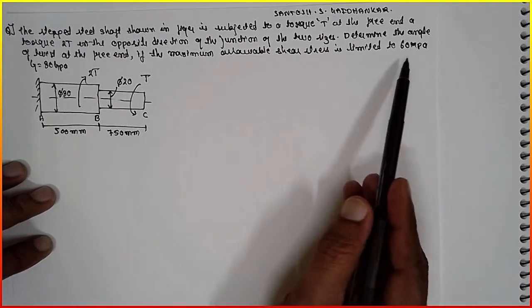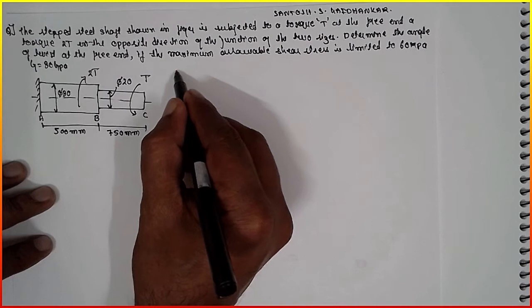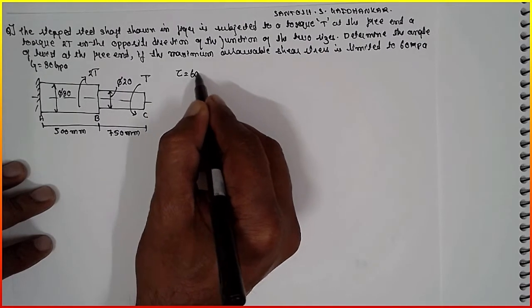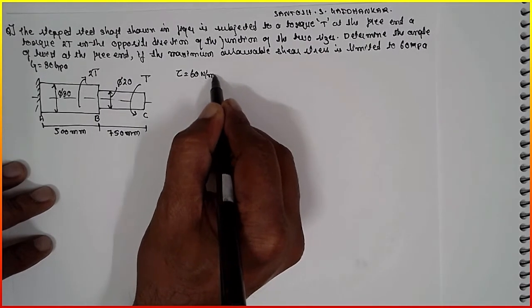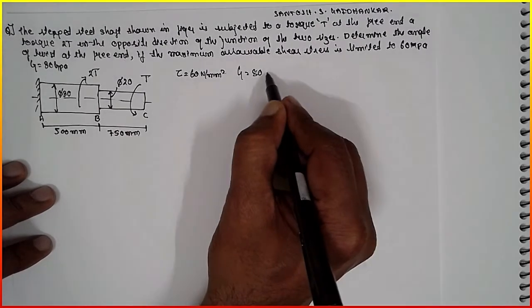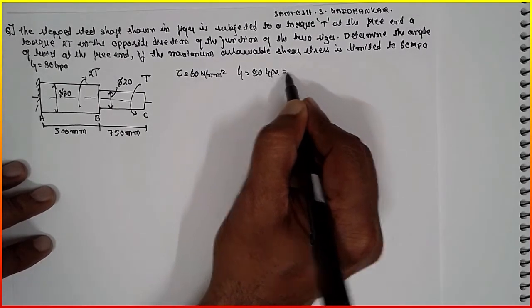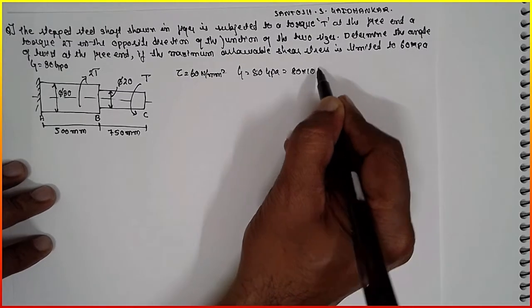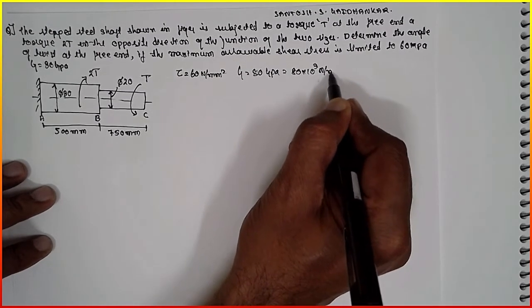Maximum allowable shear stress is limited to 60 N per mm square, and G is equal to 80 GPa, that means 80 into 10 raised to 3 N per mm square.